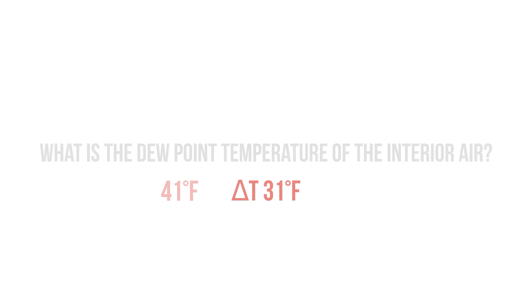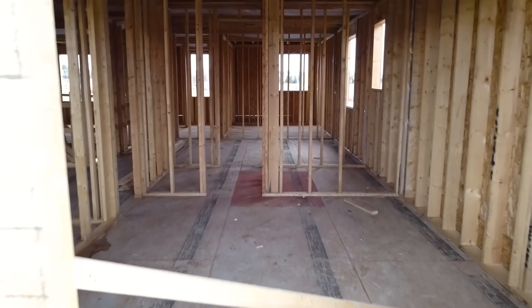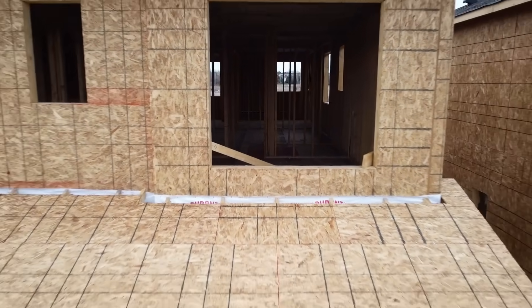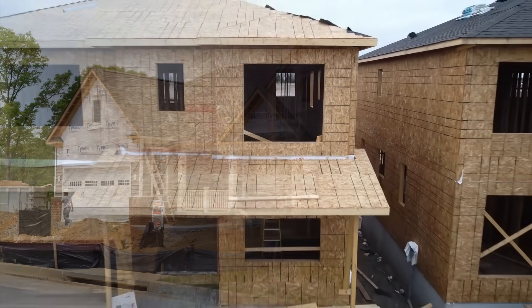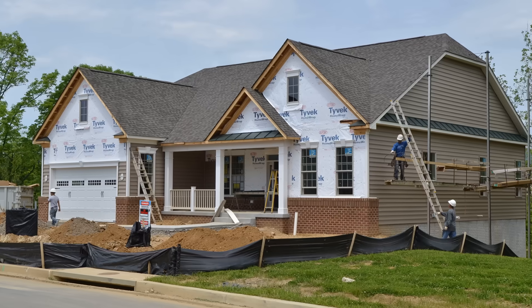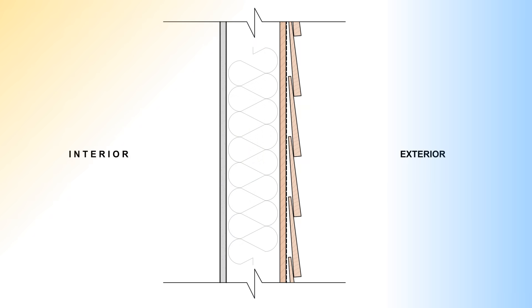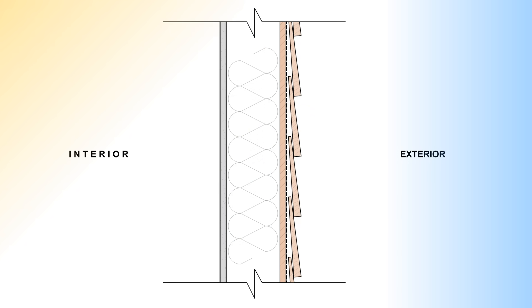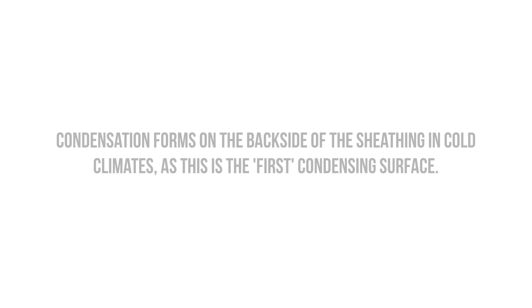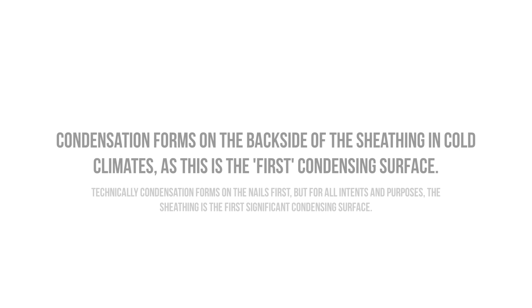How are most of our walls constructed? Well, typically they're wood-framed and sheathed with plywood or OSB, at least if you're in North America, wrapped with building wrap or building paper, clad with siding, insulated cavities with batt insulation, and finished on the interior with painted gypsum board. What do you think the temperature of this sheathing will be if the temperature outside is 10 degrees Fahrenheit? Pretty close to 10 degrees. So we expect to see condensation on the backside of our sheathing in cold climates, as this is the first condensing surface.